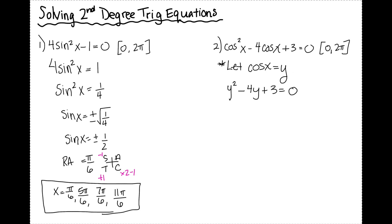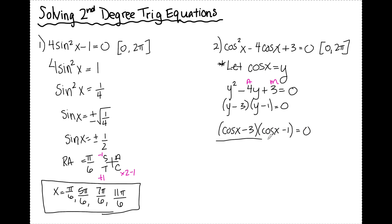We're going to want to factor this. Replacing cosine x with y gives me y squared minus 4y plus 3 equals 0. I'm looking for two numbers that add to negative 4 and multiply to positive 3, so I get y minus 3 and y minus 1. Substituting cosine x back in for y, I have cosine x minus 3 and cosine x minus 1. On the left side, cosine x equals 3 has no solution since cosine x must be between negative 1 and positive 1. On the right side, cosine x equals positive 1, which occurs at 0 and 2 pi.